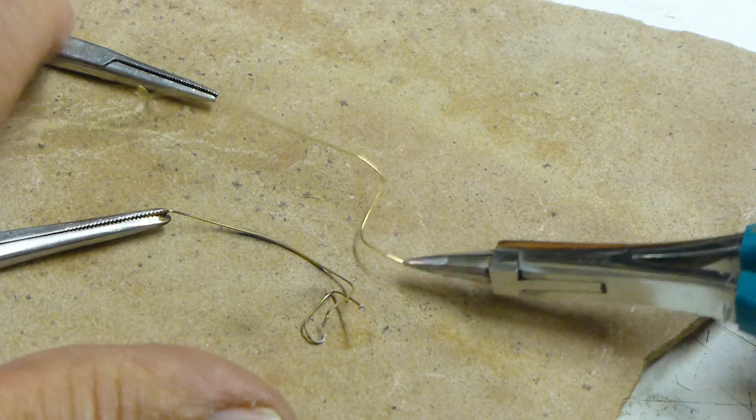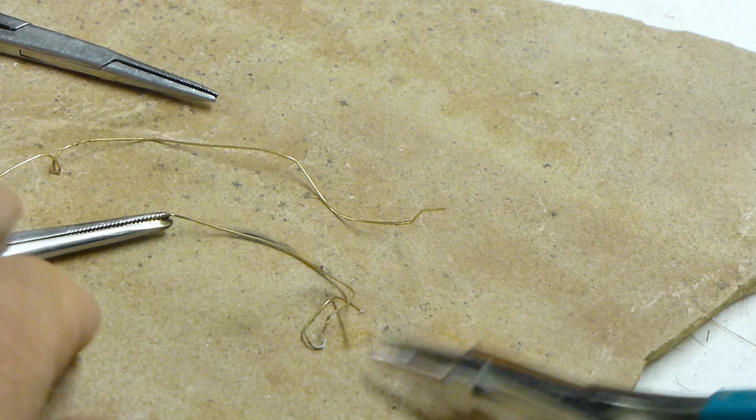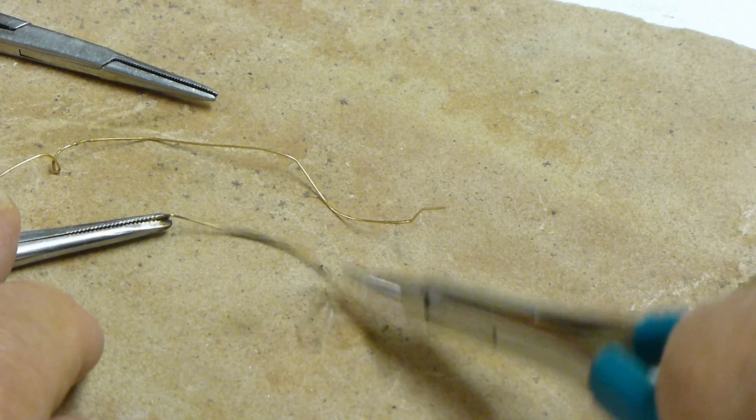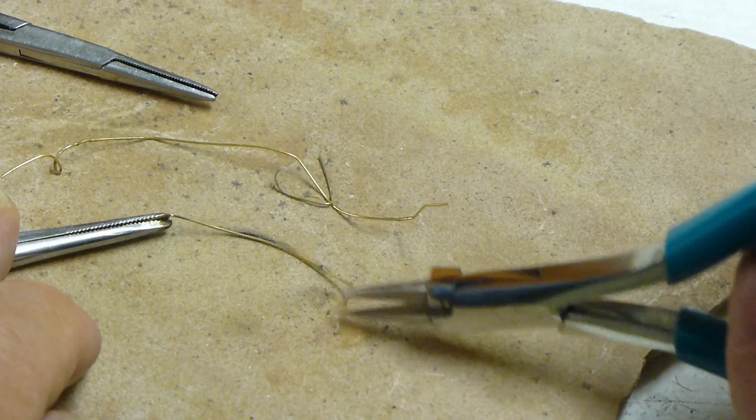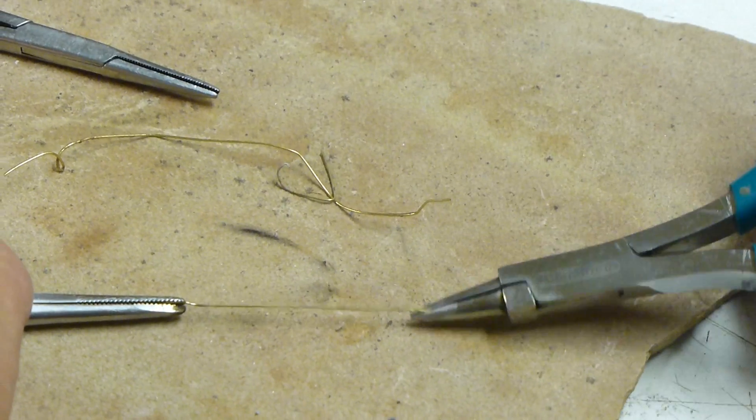I grabbed the untreated one just again to make this little comparison. It took a little bit of force, but the treated one, once I got hold of it, was easy to straighten. So the annealing did make a difference there.